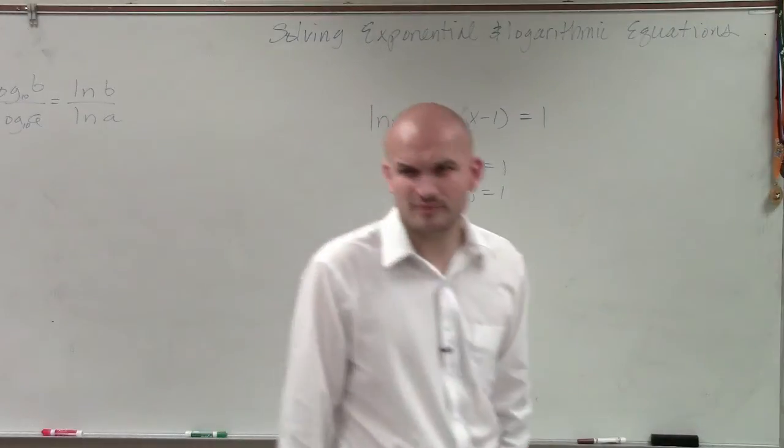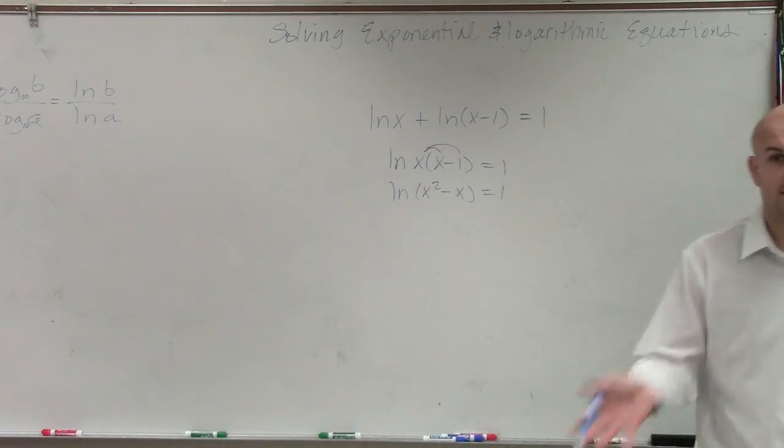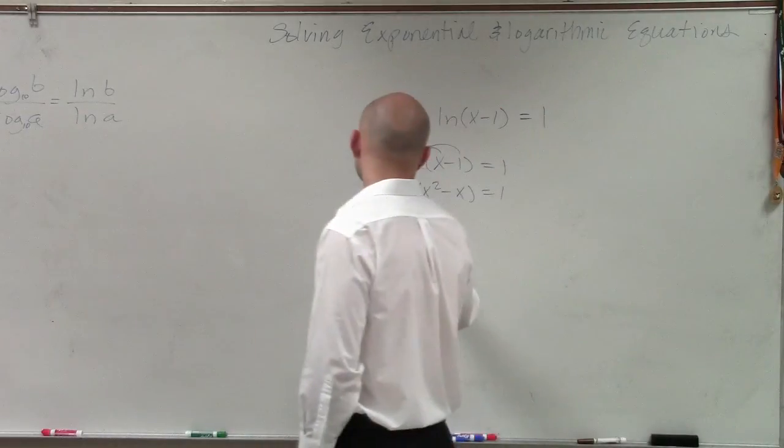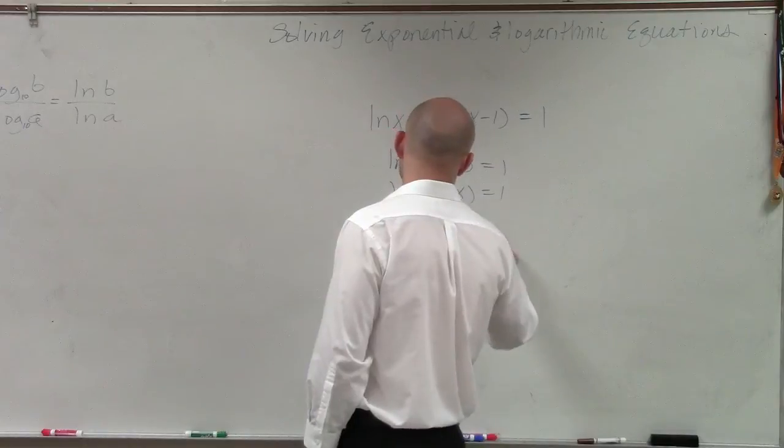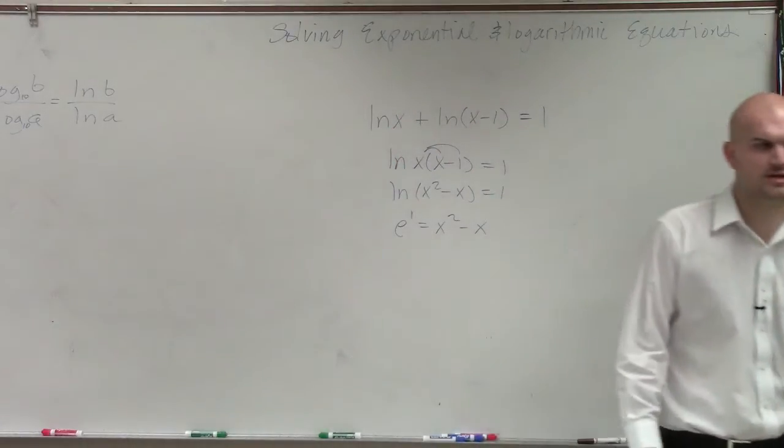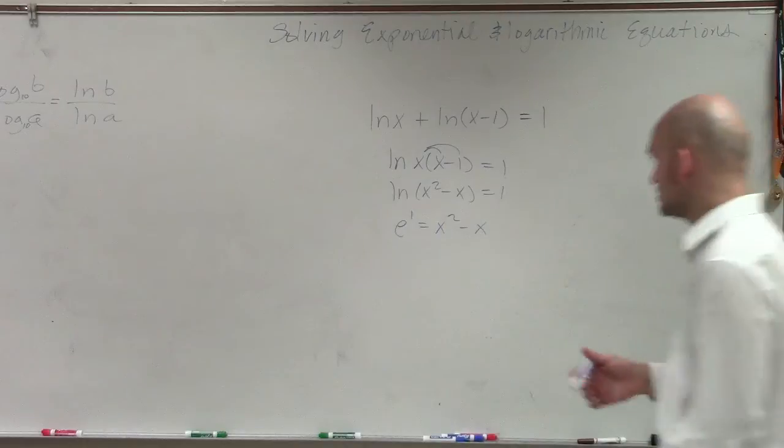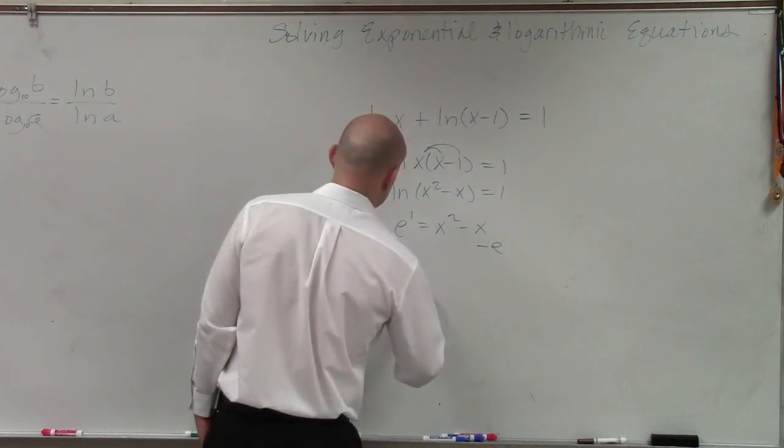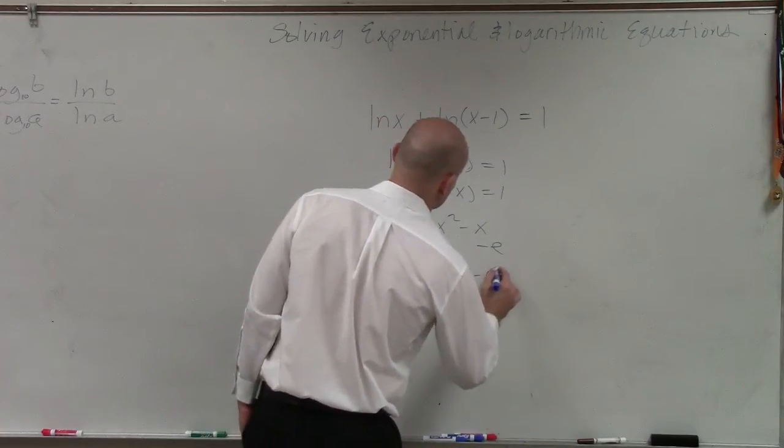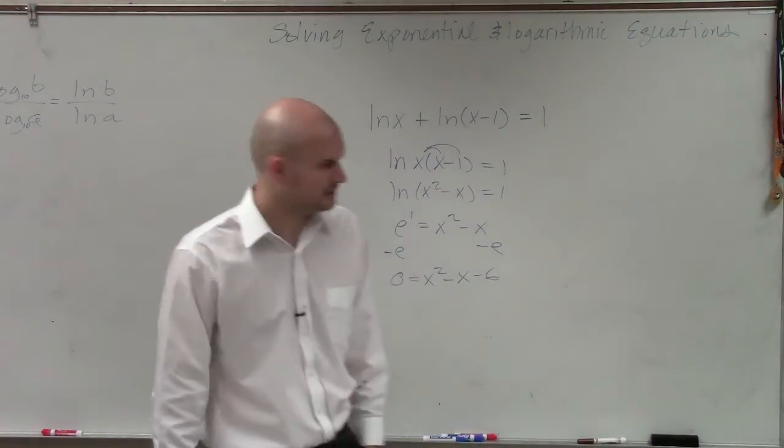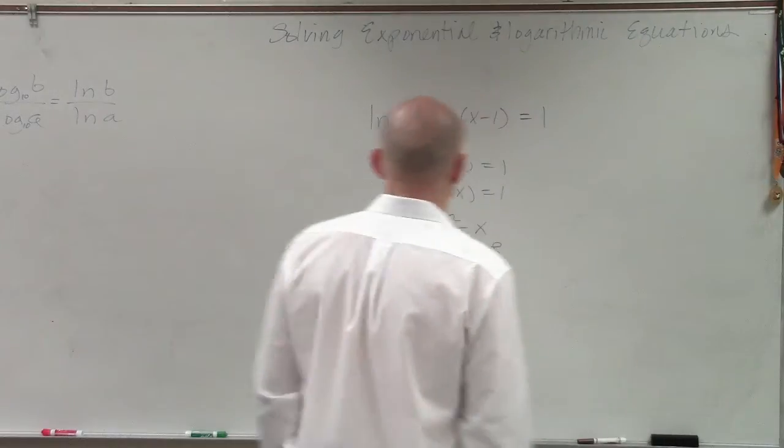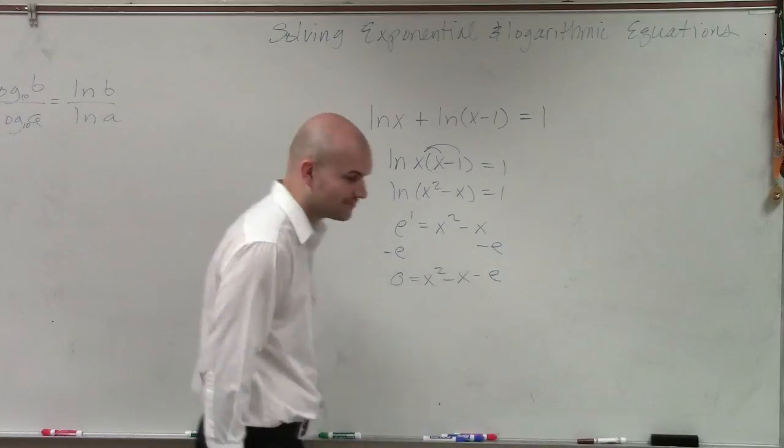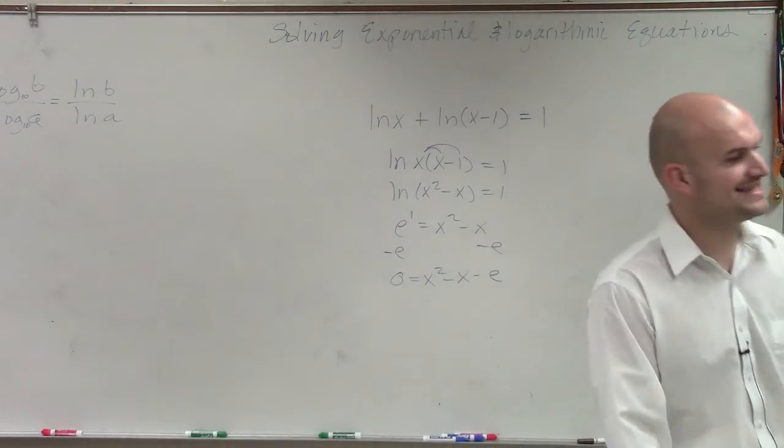Now, what am I going to do from here? I can now go ahead and convert this to exponential. So e to the 1 equals x squared minus x. We still need to solve for our x. To solve for x, we need to set this equal to 0. So therefore, I have 0 equals x squared minus x minus e.